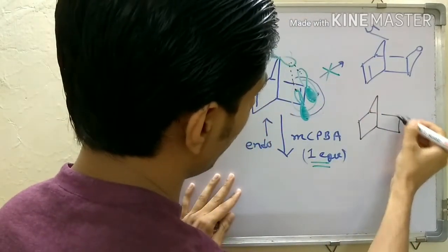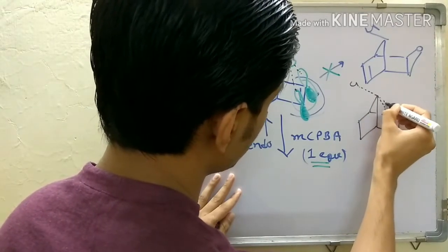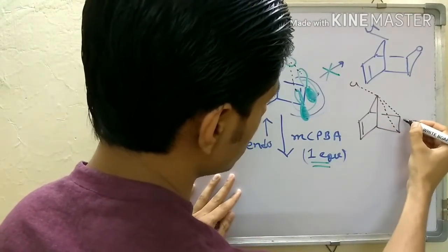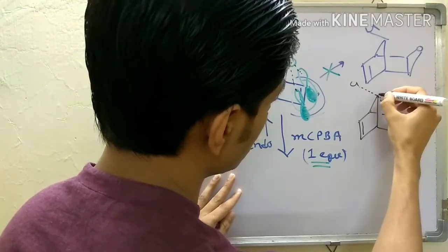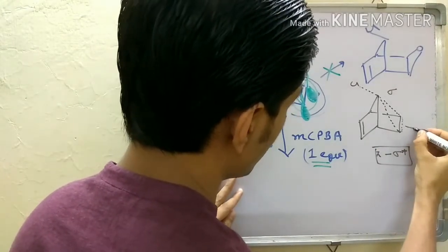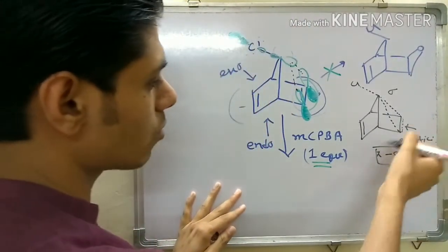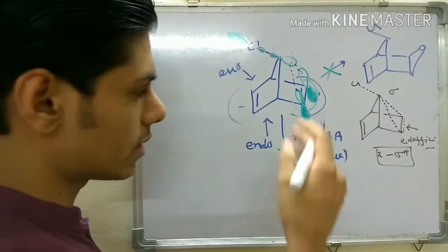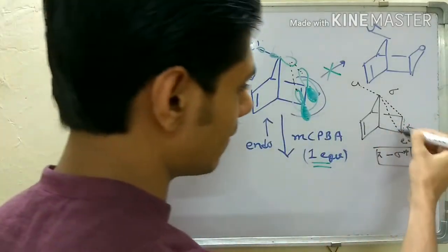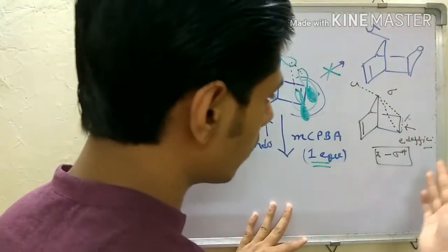From this double bond, electrons are delivered into this C-Cl bond. We can represent it like this: electron density is pulled from this pi bond into this sigma-star orbital. So this is a pi–sigma* interaction. This pi–sigma* interaction makes this double bond electron deficient. With MCPBA, the epoxidation is electrophilic epoxidation - the pi bond donates electrons - but if it is already electron deficient, how can it donate? That's why electronically it is not a very good nucleophile to attack on MCPBA, and that's why it will not react.